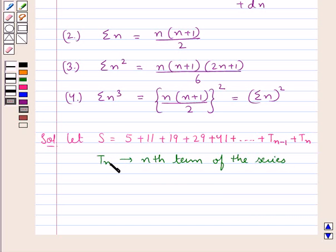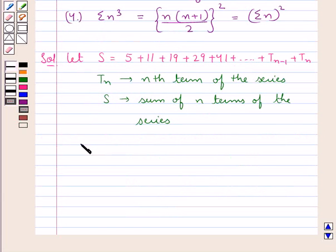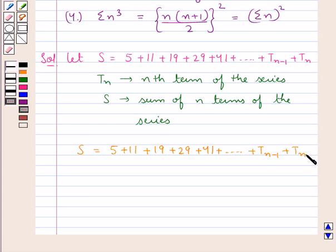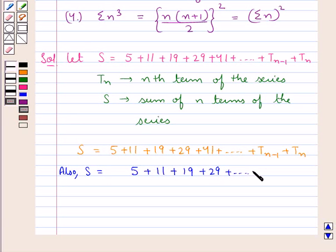Here Tn is the nth term of the series and Sn is the sum of n terms of the series. We also write a shifted version: Sn equals 5 plus 11 plus 19 plus 29 plus 41 plus and so on plus T(n-1) plus Tn, where each term has been shifted to the right hand side.